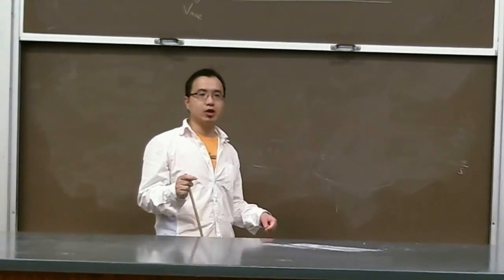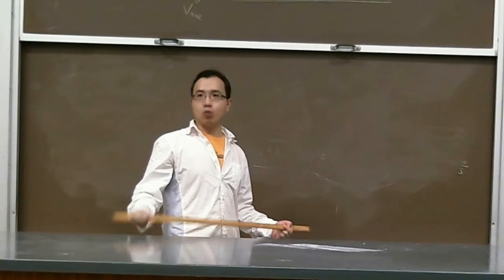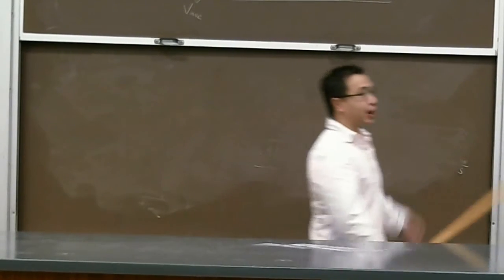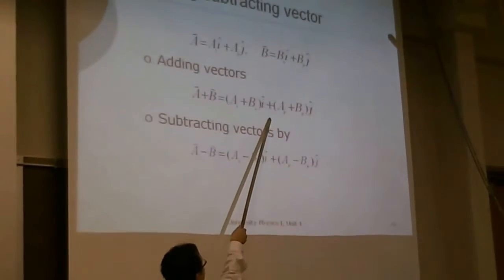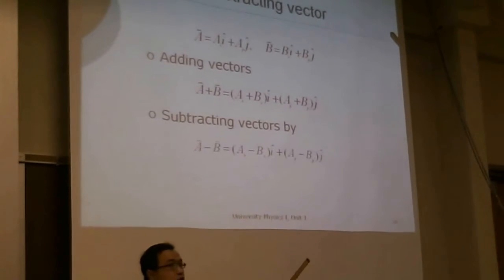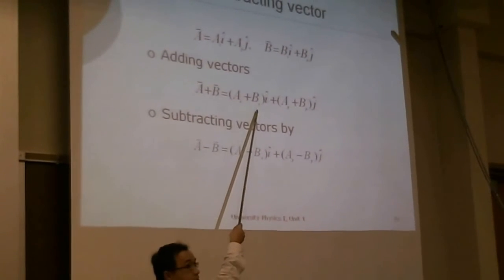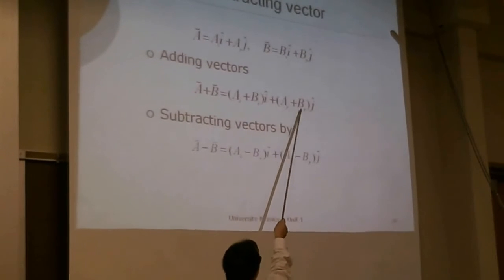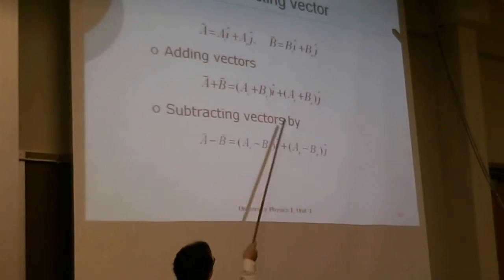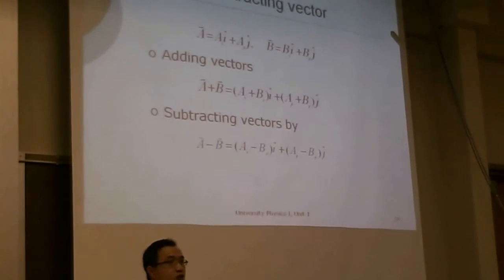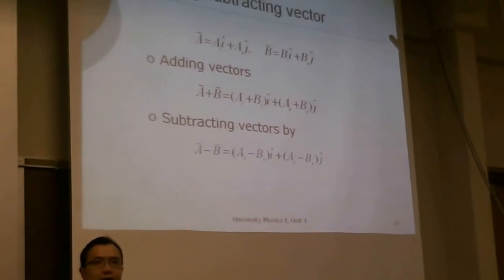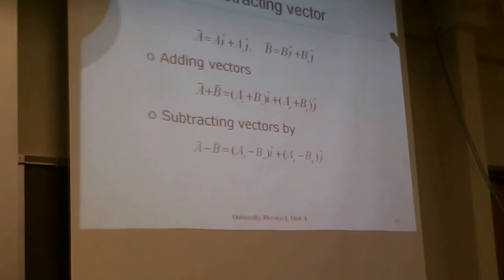In fact, it can be completely expressed in this way: A vector plus B vector equals to (Ax plus Bx) i-cap plus (Ay plus By) j-cap. So here we add x-components Ax and Bx separately, Ay and By separately. This is the x-component of the summation vector, this is the y-component of the summation vector. And in this kind of notation, you can see the advantages.